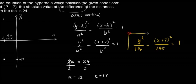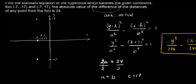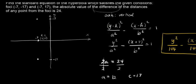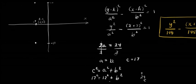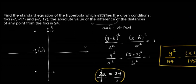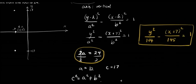This is the equation of your hyperbola with foci at (-7, -17) and (-7, 17), and the absolute value of the difference of the distance of any point from the foci is 24. The turning point here is knowing this definition.